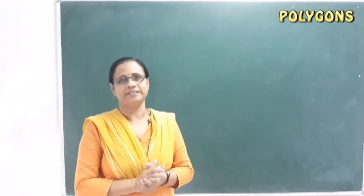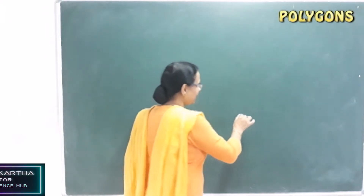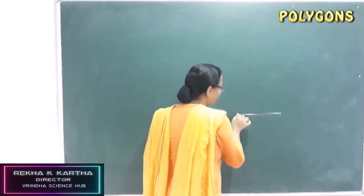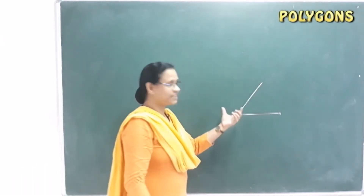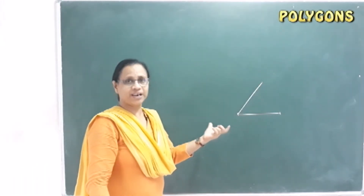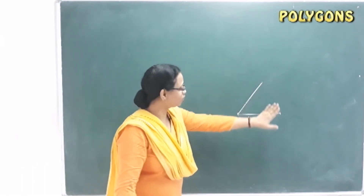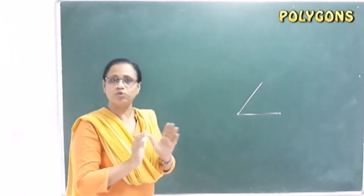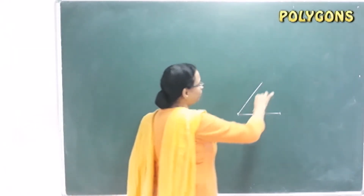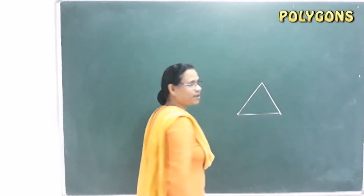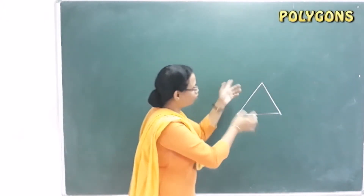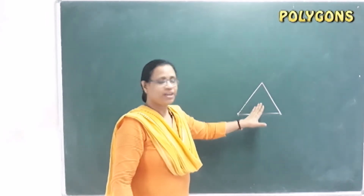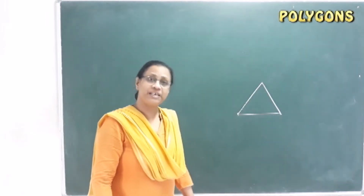This is one line segment. One line segment forms an angle. Two line segments do not form a closed figure. We also cannot have a closed figure with just two line segments. With three line segments, we can have a closed figure — this is called a Triangle.